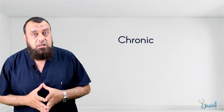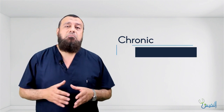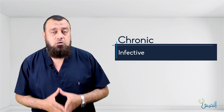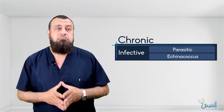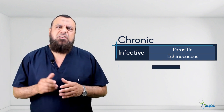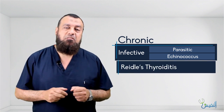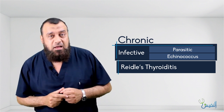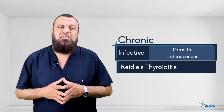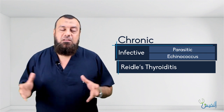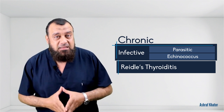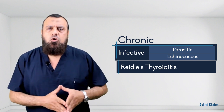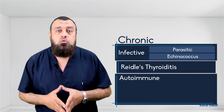There is acute, there is subacute, and the third one is chronic thyroiditis. Chronic thyroiditis may be infectious in origin — for example, parasitic or echinococcus. It may also be what we call Riedel's thyroiditis, which is fibrosing thyroiditis — a type of fibromatosis — and it results in woody thyroid enlargement. It feels very hard and is difficult to differentiate from malignancy.